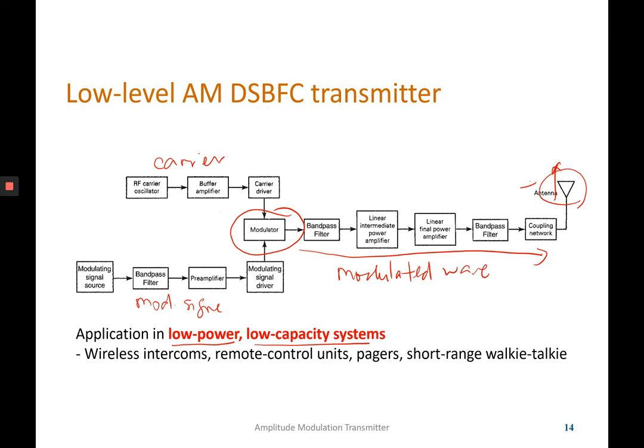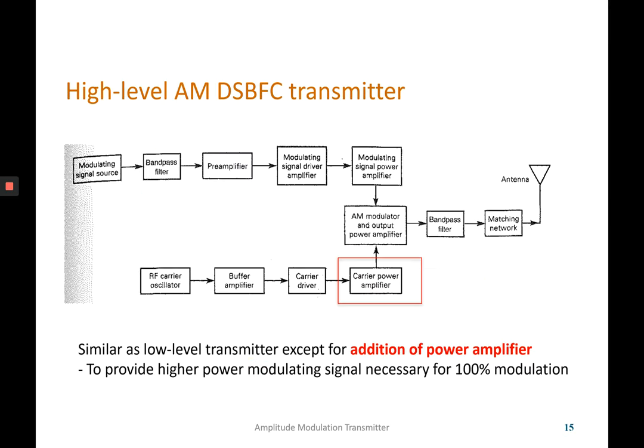For the high level transmitter, it is similar to the low level transmitter but uses additional power amplifiers — more than what the low level transmitter uses. These extra power amplifiers are needed to provide a high power modulating signal necessary to achieve 100% modulation index.